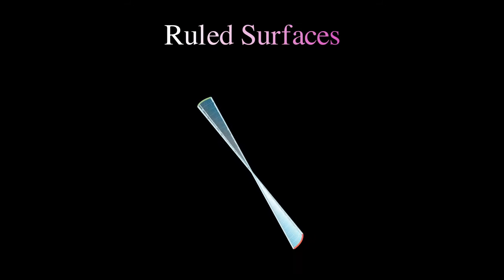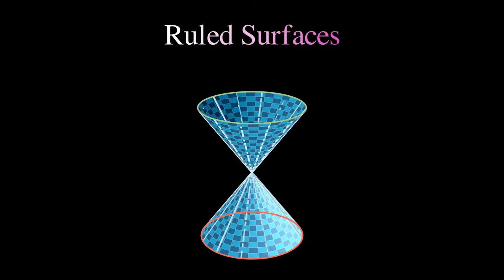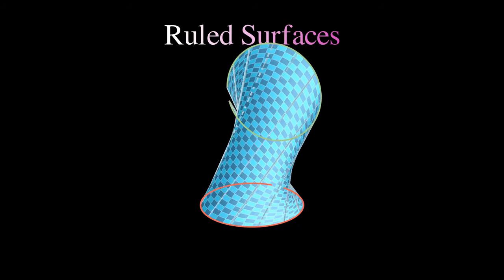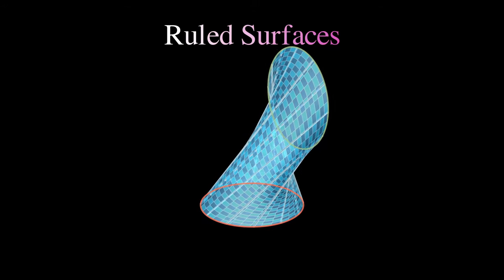Now, it should not be a surprise that we need to know about surfaces comprised of lines when we're trying to count intersections of lines. But ruled surfaces are used for more than just our question, and particularly in architecture.